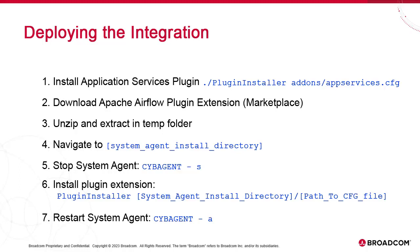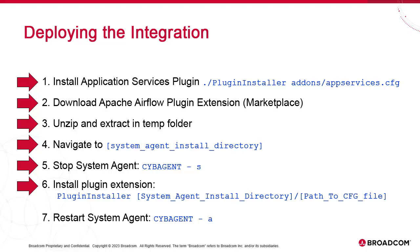Let's take a look at how to deploy the integration. First, make sure the application services plugin is installed as a prerequisite. The application services plugin and POJO extension have the CFG extension. In older agent versions, you might encounter a PAC file instead. Next, download the plugin extension package from Marketplace — this package contains all the necessary elements. Unzip the package and extract the contents into a temporary directory. Navigate to the system agent install directory. Stop the system agents with the sybagent-s command. Install the plugin extension with the plugin installer command, specifying the system agent install directory and the path to the CFG file. Finally, restart the system agents with the sybagent-a command.